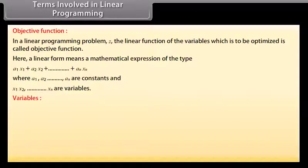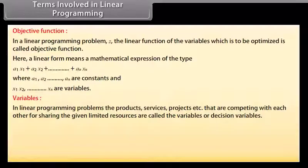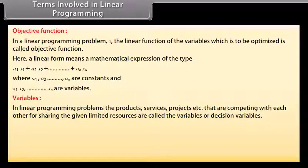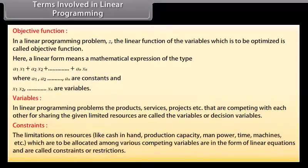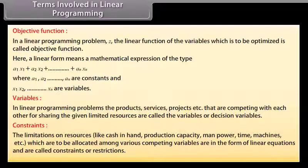Variables: In linear programming problems, the products, services, projects, etc. that are competing with each other for sharing the given limited resources are called the variables or decision variables. Constraints: The limitations on resources like cash in hand, production capacity, manpower, time, machines, etc., which are to be allocated among various competing variables, are in the form of linear equations and are called constraints or restrictions.